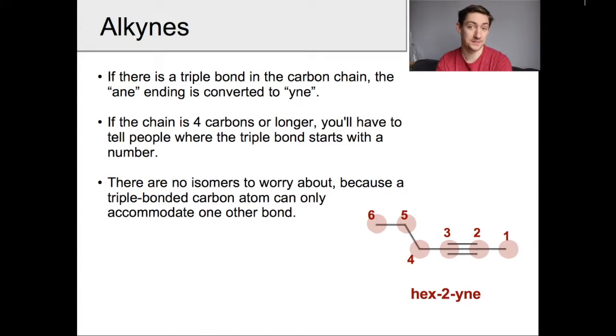What we have below is a six carbon chain with a triple bond starting at carbon number two. Now I've numbered the chain from the right to the left because that gives the triple bond the lower number, two versus four. So we're going to call this hex-2-yne: hex for six carbons, yne for the triple bond, and two to tell us where the triple bond starts.